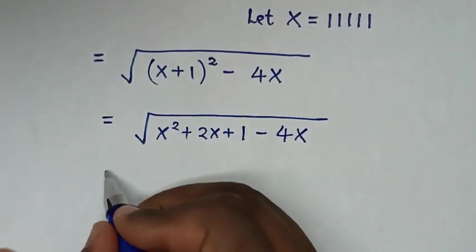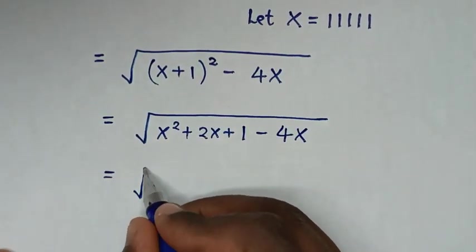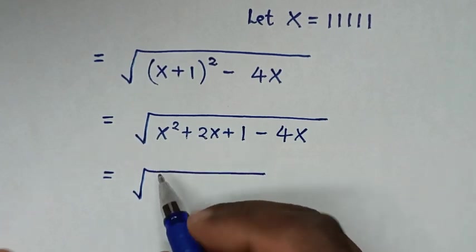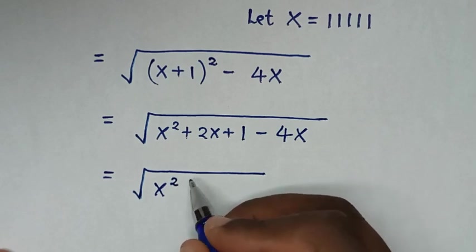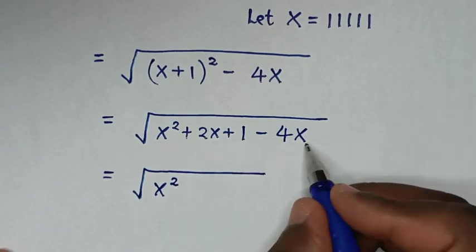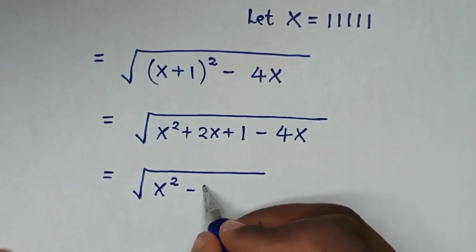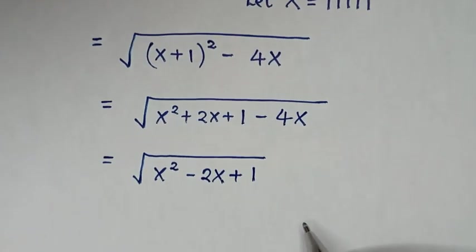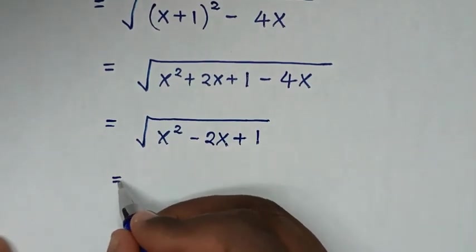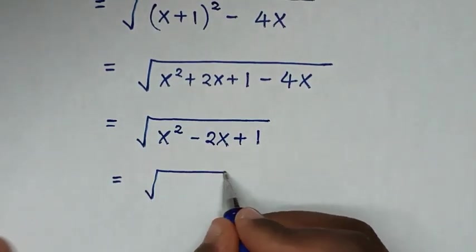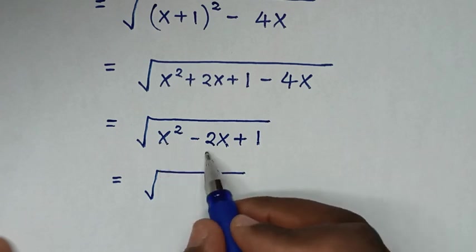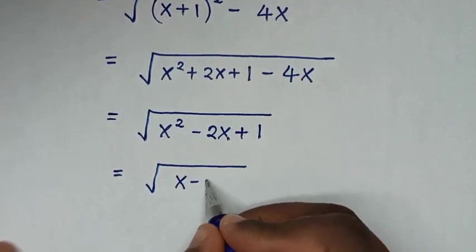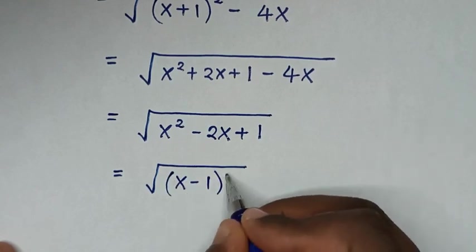Then in the next step, it will be equal to square root of x squared, then 2x minus 4x, which is negative 2x, plus 1. Then it will be equal to square root of x squared minus 2x plus 1, which is the same as (x minus 1) squared.